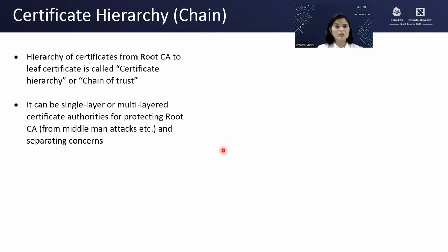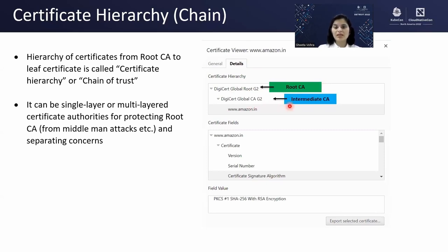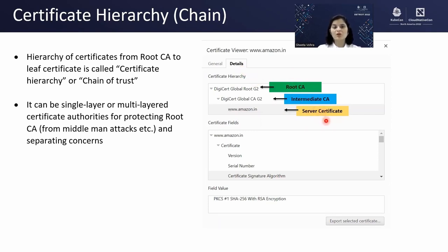There is a hierarchy of certificates from root CA to leaf certificate, called the certificate hierarchy or chain of trust — it can be single layer or multilayer. For example, Amazon.in has a root CA (DigiTrust Global Root G2), an intermediate CA signed by that root CA, and server certificates like Amazon.in, Amazon.uk, and Amazon.us signed by the intermediate CA. This chain of trust is how real-world PKI environments are built.